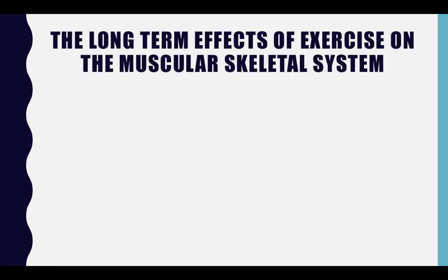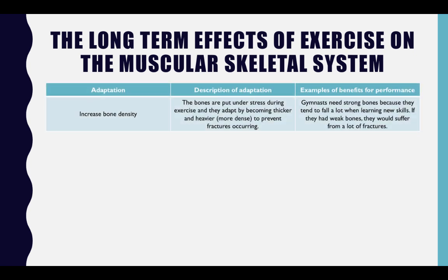The first adaptation is an increase in bone density. This is when the bones are put under stress during exercise and they adapt by becoming thicker and heavier — more dense — to prevent fractures occurring. An example of this benefit for performance: gymnasts need strong bones because they tend to fall a lot when learning new skills. If they had weak bones, they would suffer from a lot of fractures.